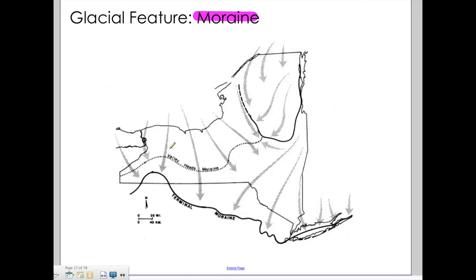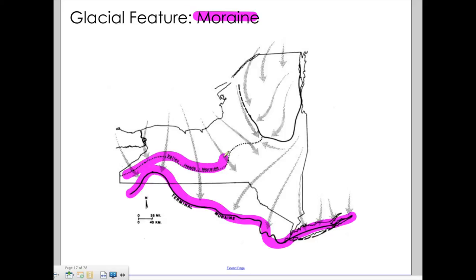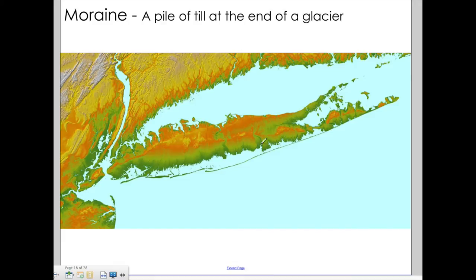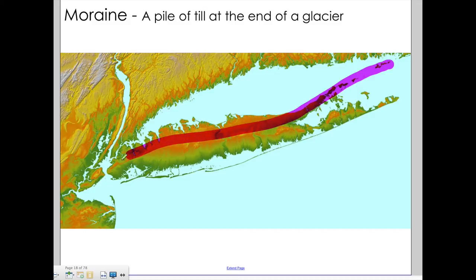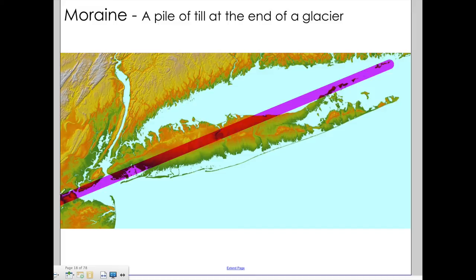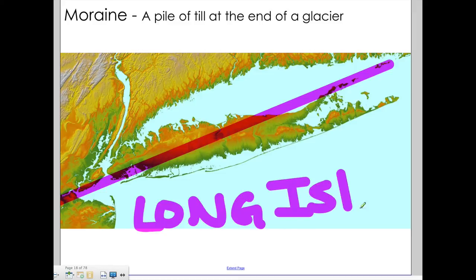A moraine is the final hill — the big pile of debris that the front of the glacier makes. Here's a picture of the terminal moraine for one glacier, and another moraine from a previous glacier at a different period in time. Every time the glacier moves forward it pushes material, then melts back and pushes more. The moraine stretches right here, makes the hills on Long Island, and continues down into New Jersey. When you see the word moraine, think of Long Island.